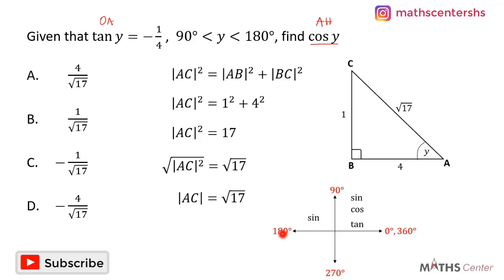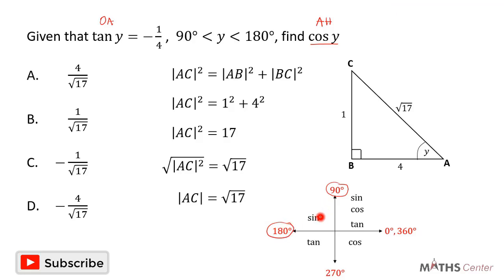If the angle falls between 180 and 270 degrees, only tan is positive. If it falls between 270 and 360 degrees, only cos is positive. Here, since y is between 90 and 180 degrees, the angle is in the second quadrant where only sine is positive, so cos y will be negative.